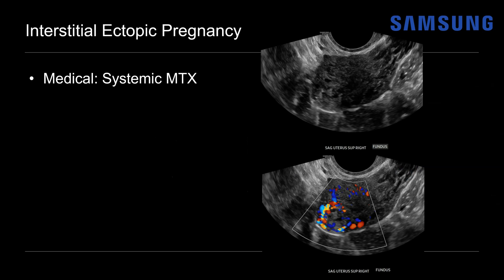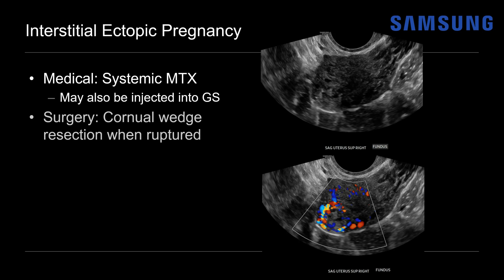The treatment for interstitial ectopic pregnancy is sometimes systemic methotrexate. Methotrexate may also be injected into or adjacent to that ectopic gestational sac. If the ectopic pregnancy has ruptured, then a cornual wedge resection may be required, and if that fails, hysterectomy may be indicated.